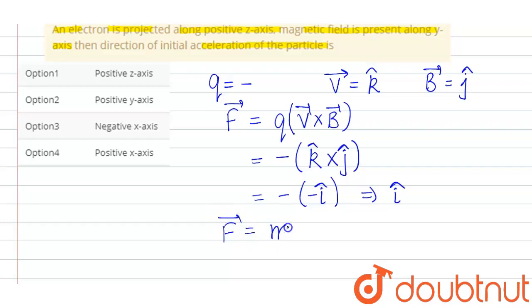Now we know force equals mass times acceleration, so this implies that the direction of acceleration will also be i-cap, which is the same as that of force because mass is a scalar quantity. So the correct answer will be positive x-axis, which is option 4.